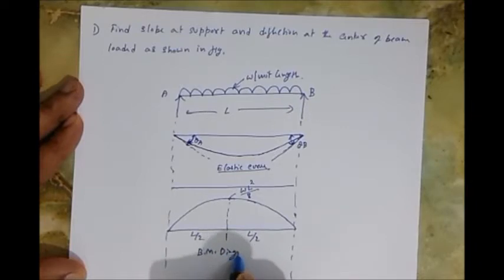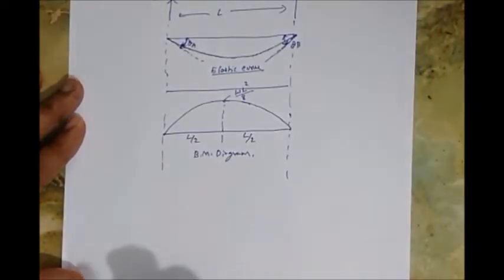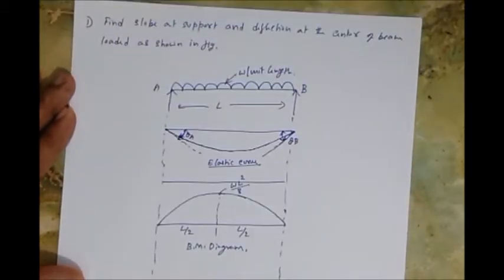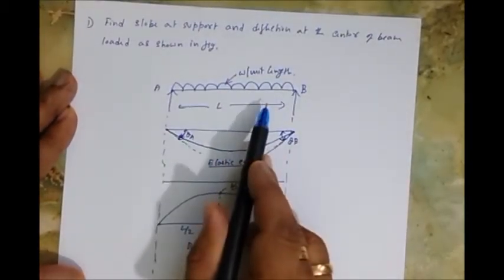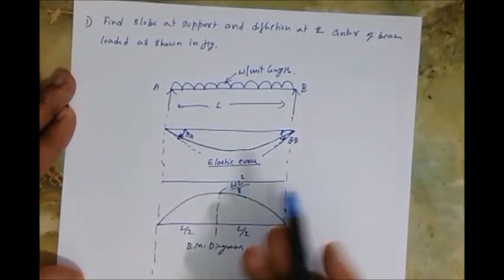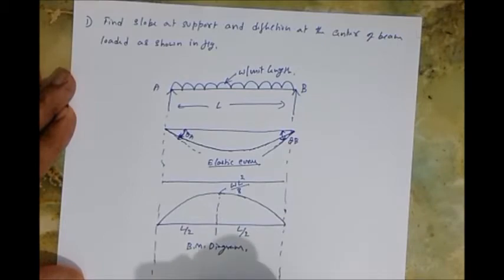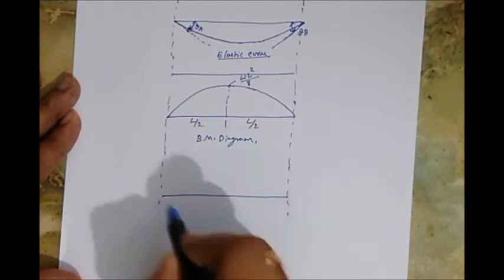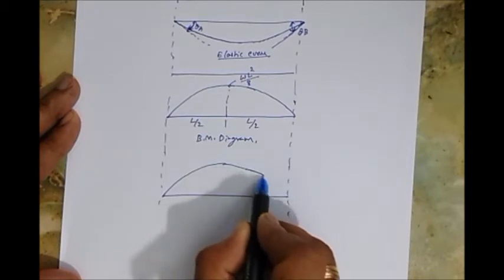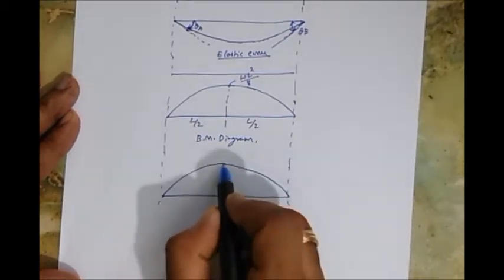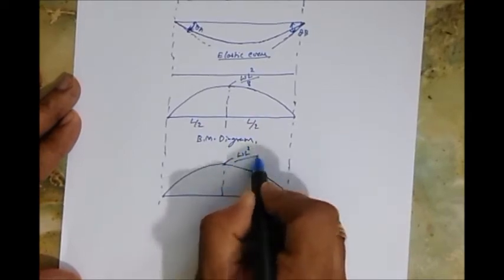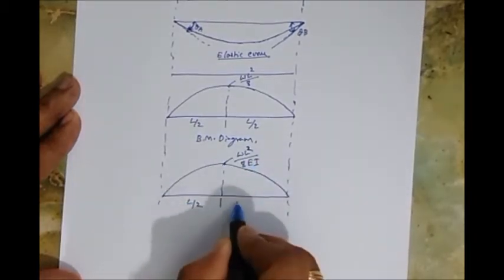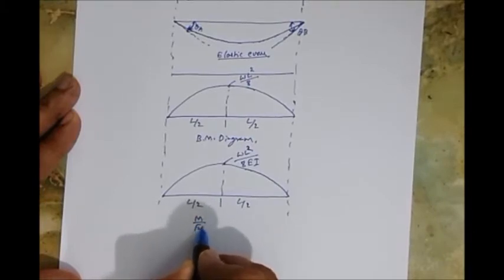Now draw the M/EI diagram. Since EI is constant in this case, we can use the same shape as the bending moment diagram. Let's redraw it: the maximum ordinate is WL²/8EI, with the parabolic shape spanning L/2 on each side. This is the M/EI diagram we'll use for applying the moment area theorems.